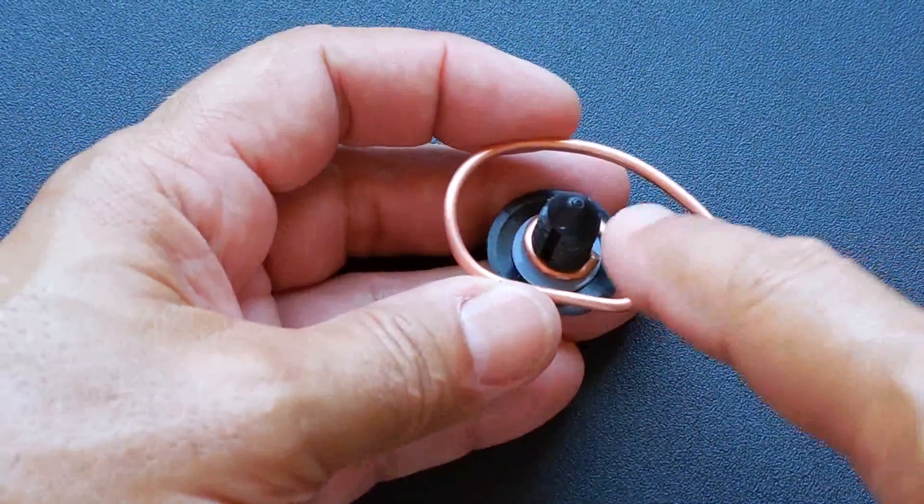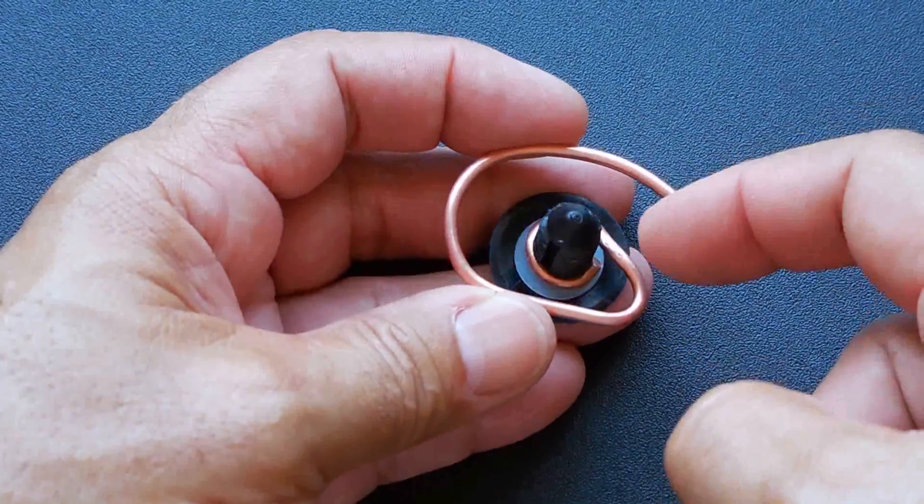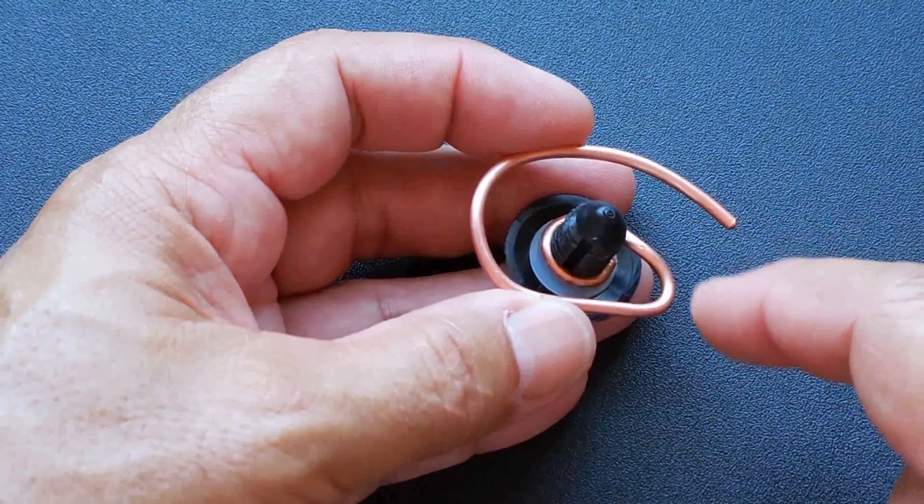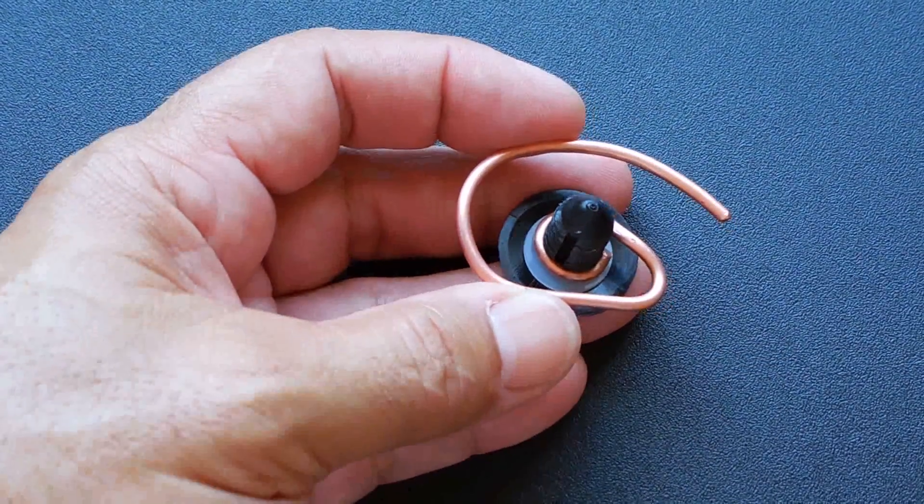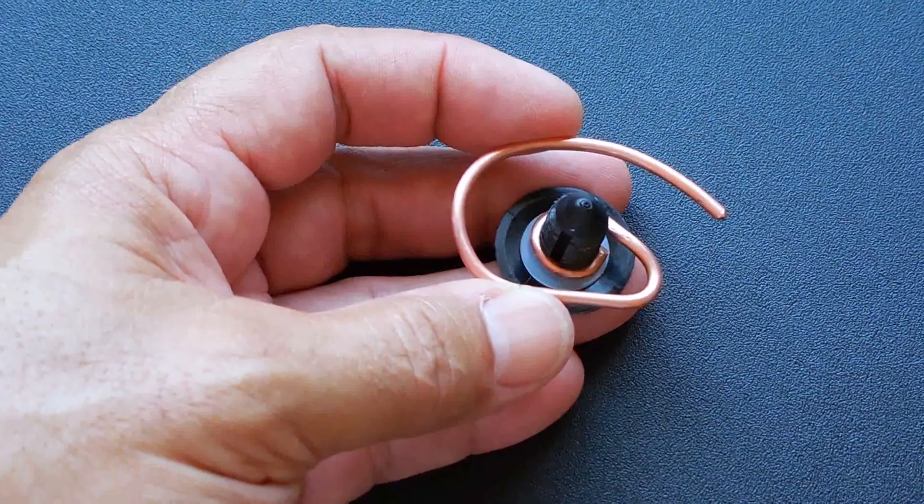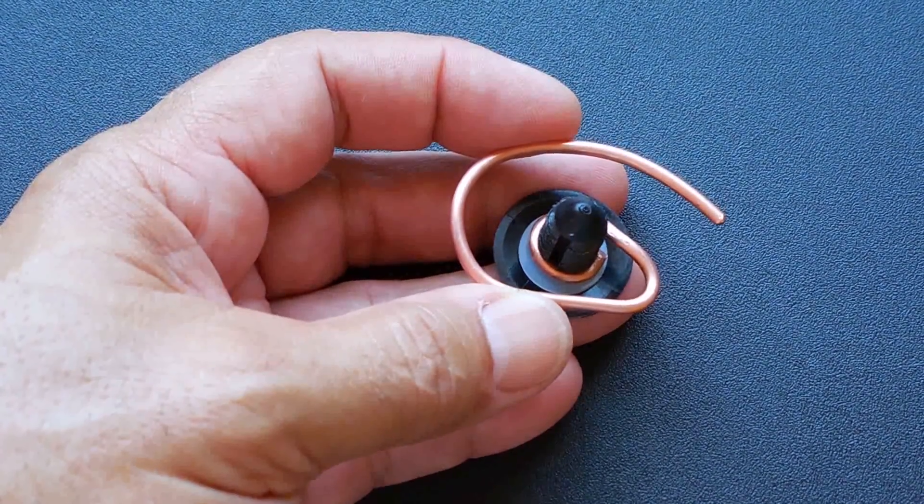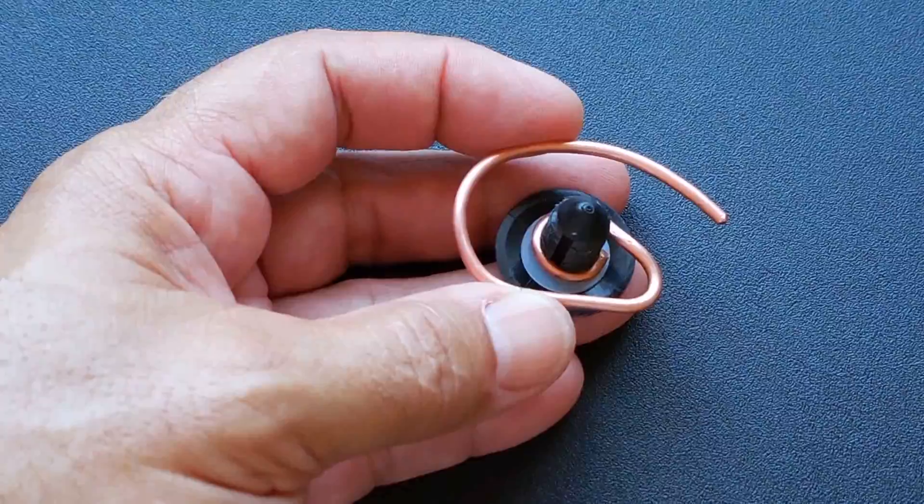The next step, you're going to trim off the back side of this, leaving only about a quarter of an inch past the copper. That could be done with a hacksaw blade, diagonal cutters, or a very sharp utility knife.